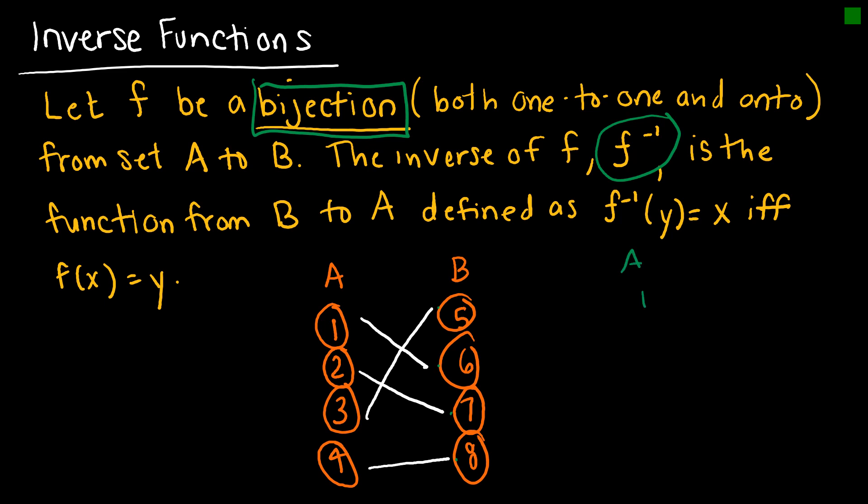A is 1, 2, 3, 4. And so because 3 maps to 5, then 5 will map to 3. Since 2 maps to 7, 7 will map to 2. Since 1 maps to 6, 6 will map to 1. And since 4 maps to 8, 8 will map to 4.